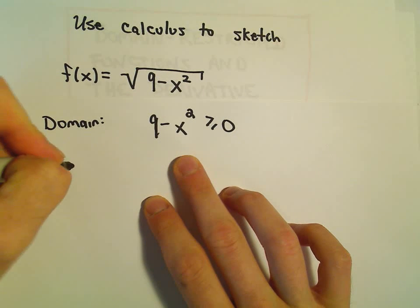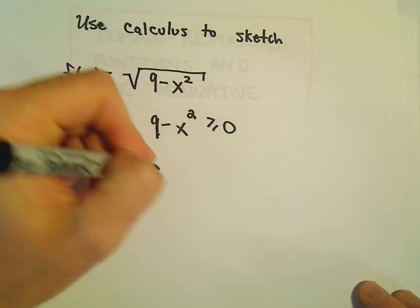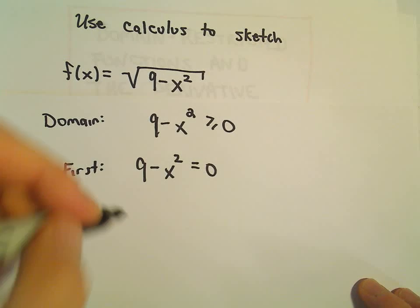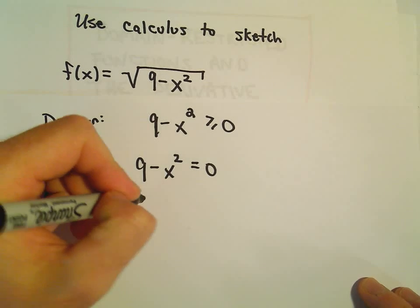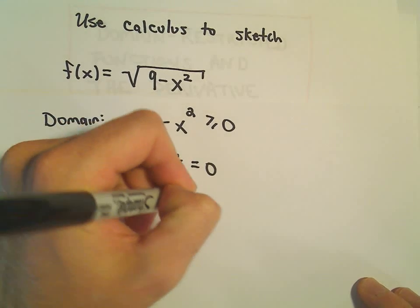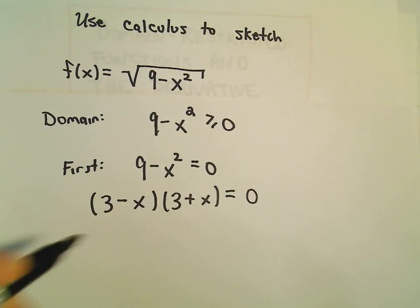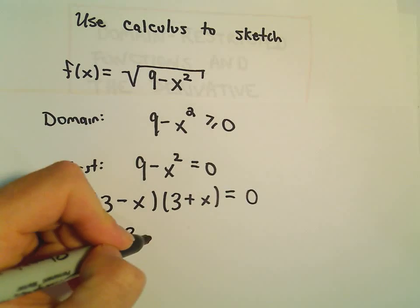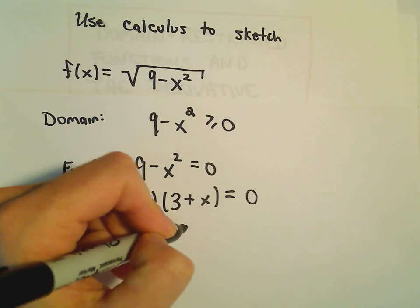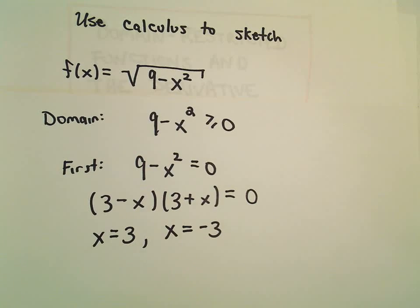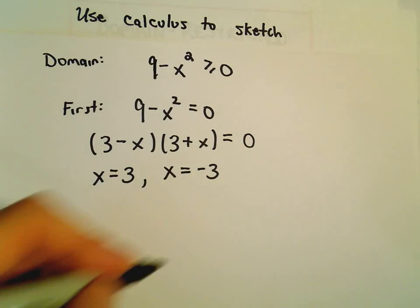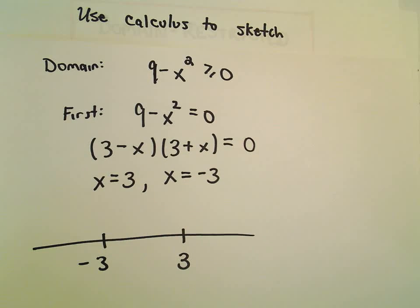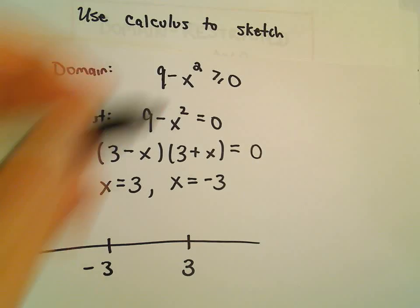The first thing we do is solve the corresponding equation: 9 minus x squared equals 0. We can factor that as (3 minus x)(3 plus x) — this is a difference of perfect squares. Setting each factor equal to 0 gives x equals 3 and x equals negative 3. I make a number line and put those numbers on there: negative 3 and positive 3.